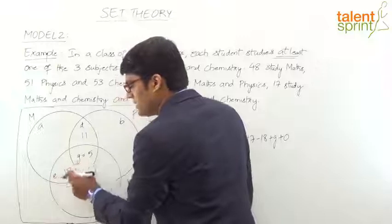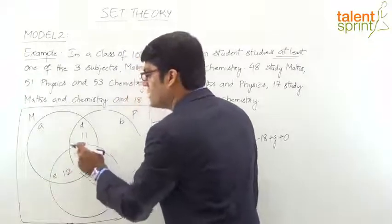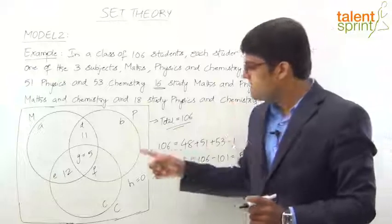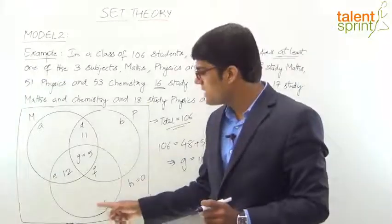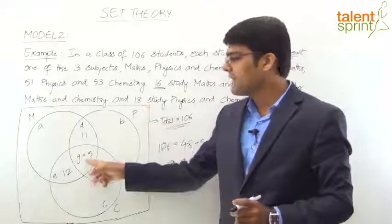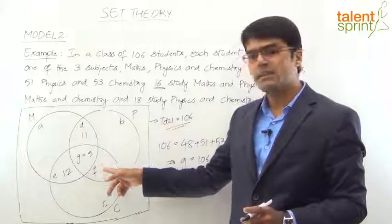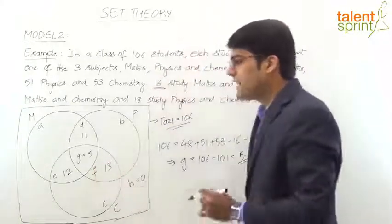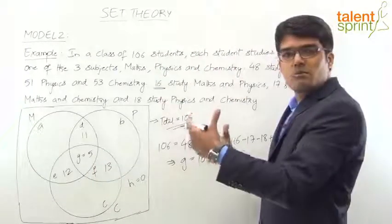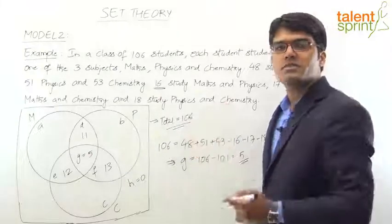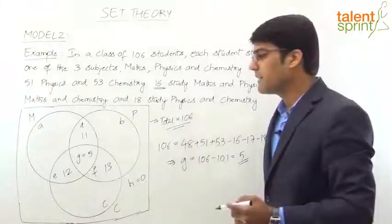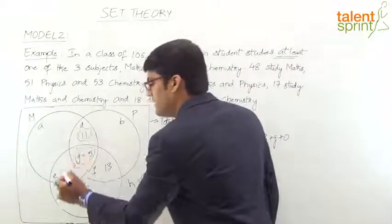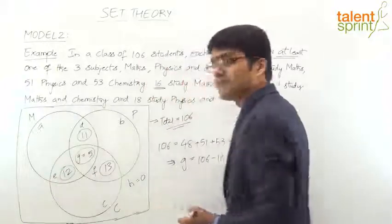Similarly, 18 study Physics and Chemistry. Physics and Chemistry corresponds to region F + G = 18. Since G = 5, F = 18 − 5 = 13. So the regions D = 11, E = 12, F = 13 are now filled in.